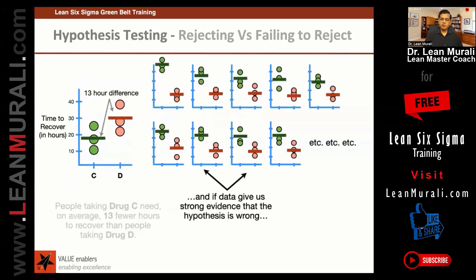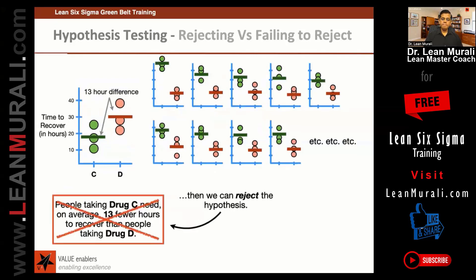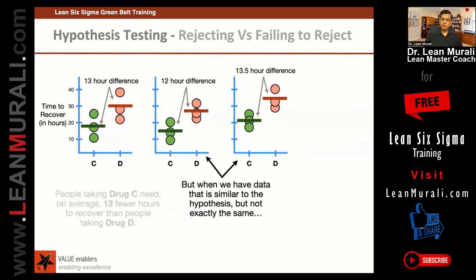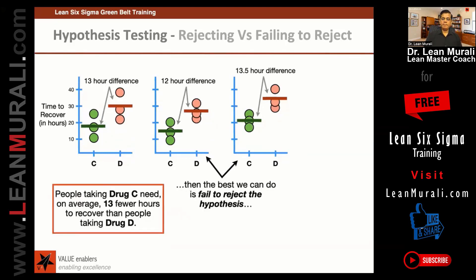What we have covered so far is the data gives us strong evidence that the hypothesis is wrong. If the data gives us strong evidence that the hypothesis is wrong, then we can reject the hypothesis. But when we have data that is similar to the hypothesis but not exactly the same, we fail to reject the hypothesis.